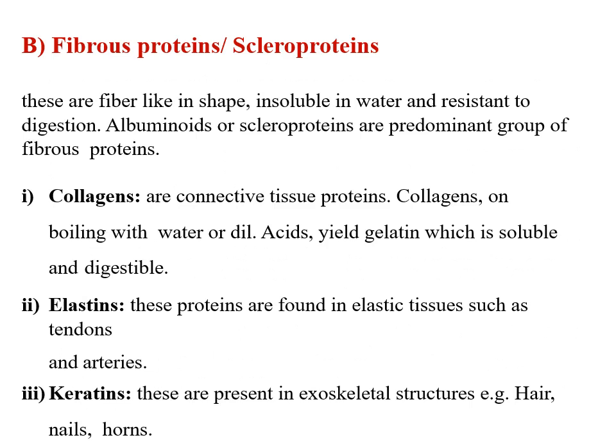The second category of simple proteins is fibrous proteins or scleroproteins — these are fiber-like in shape, insoluble in water, and resistant to digestion. Albuminoids or scleroproteins are the predominant group. Collagen is an example — a connective tissue protein that on boiling with water or dilute acid yields gelatin, which is soluble and digestible. Elastin is another fibrous protein found in elastic tissues such as tendons and arteries. Keratins are present in exoskeleton structures such as hair, nails, and horns.